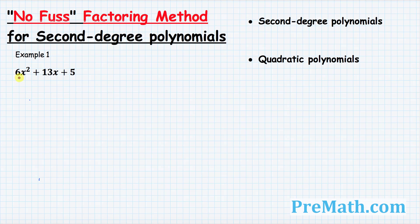whose leading coefficient is other than 1. As you can see in our example, our leading coefficient is 6. So this method is also called no fuss factoring method.